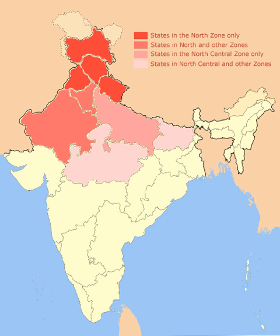Later empires include the Pala Empire (770–810 CE), the Pratihara Empire (mid-7th to the 11th century), the Delhi Sultanate (1206–1526), the Mughal Empire (1526–1540, then 1555–1857), briefly interrupted by the Sur Empire (1540–1556), the Sikh Empire (1799–1849), the Maratha Empire (1761–1818), and the British Indian Empire (1858–1947). The Delhi Sultanate, Mughal and British Indian Empires had Delhi as their capital for some or all of their rule.